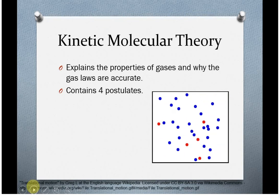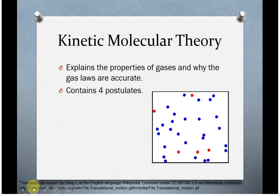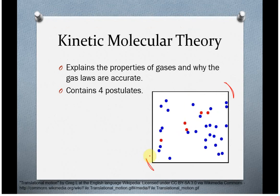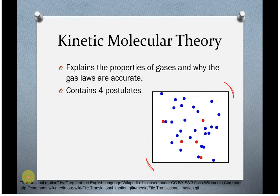Now, the kinetic molecular theory takes everything we know about gases and tries to put it in a way that would explain why it's accurate. And so, depending on where you're reading, there's four to five postulates that are used. So, remember, we've already said a bunch of times, gases are spread out,